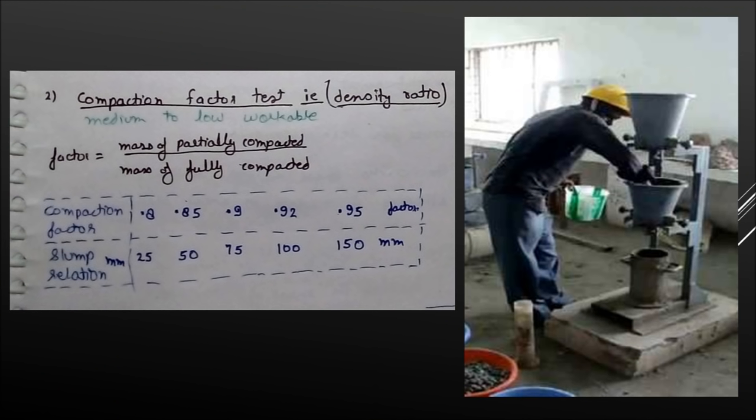The second test is the compaction factor test. In this test we take three hoppers. The top two hoppers are hinged and underneath is a cylindrical mold. Cement is filled from the top, then falls to the second hopper, then into the mold. When the mold is filled, we measure the volume and weight. Then the mold is filled properly with tamping rod and vibrator. The ratio of these two masses is the compaction factor, and from the relation table we get the degree of workability.